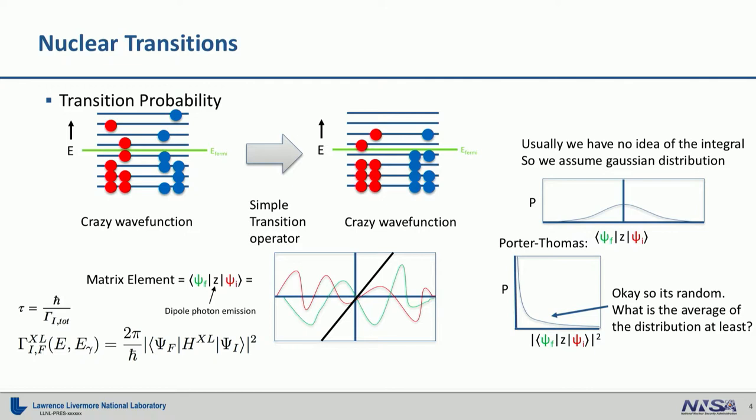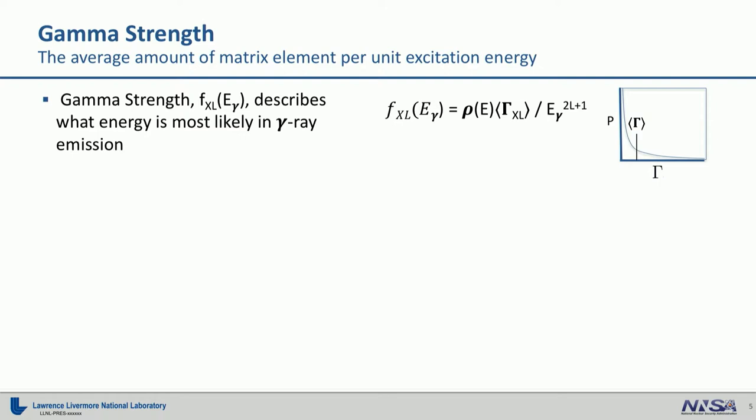Paul Fanto talked about this in his poster, so if you're interested more, you can talk to him. So, this distribution is pretty random, and we can at least know the average of this distribution. Nuclei are like basically antenna. They have a certain size, and it's very unlikely that your antenna will emit something much larger in wavelength than the size of it. So, the nuclei have a radius of about maybe a couple Fermi in length, so it's not going to emit a photon with a wavelength of a meter. It's very unlikely. So, to describe the average of this distribution, or essentially like the size of your antenna, you can think about it, we use gamma strength. And this is what my thesis measures, is gamma strength. It describes basically what energy is most likely in gamma ray emission.